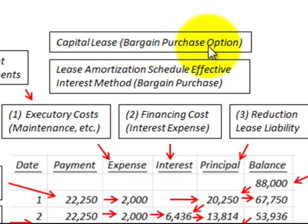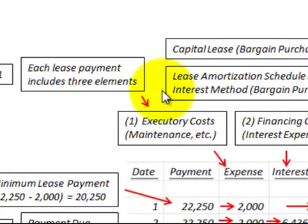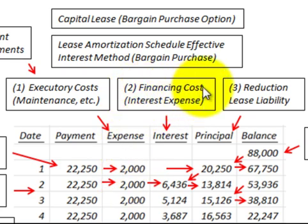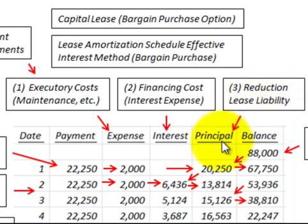Here we're going to be looking at a capital lease with a bargain purchase option. We need to set up a lease amortization schedule using the effective interest rate method, which will include the bargain purchase option. Each lease payment includes three elements: executory costs or maintenance costs, represented as an expense; financing costs or interest expense on the lease; and a reduction in lease liability, which is the principal amount paid against the lease.